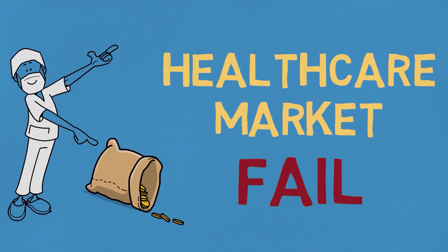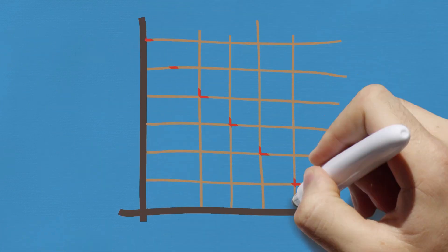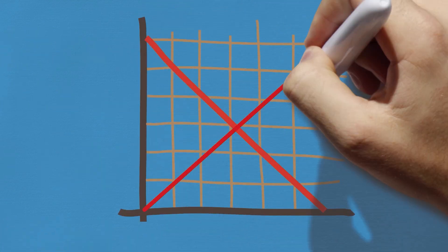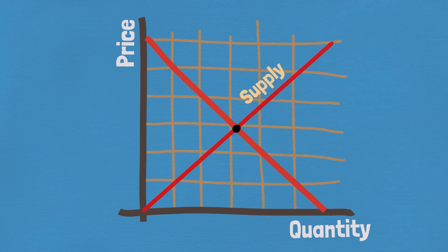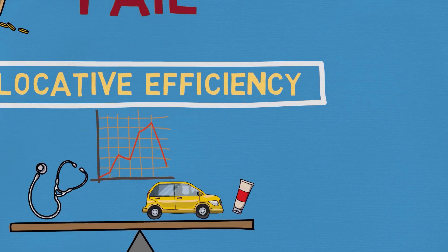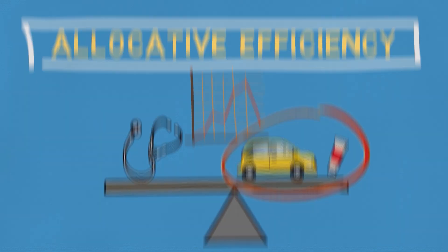Before we look at healthcare, let's look at regular garden variety market dynamics. Where the market is in equilibrium — in other words, the price and the quantity are being correctly determined by supply and demand — then there are no resources being wasted, and we call this allocative efficiency. And for most garden variety products, this works incredibly well.